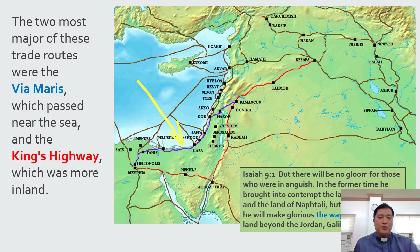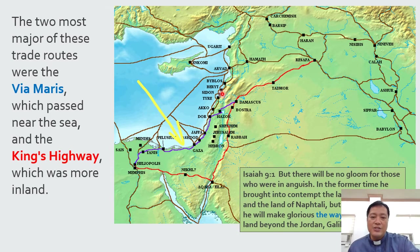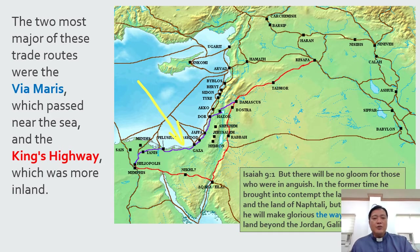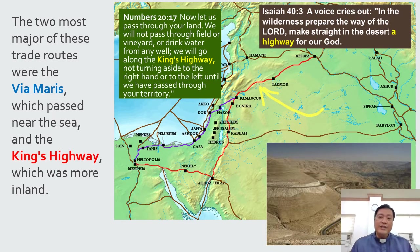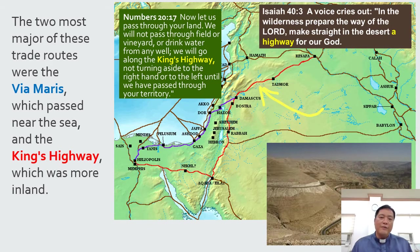The two most major trade routes were the Via Maris, which passes near the sea — it comes from Damascus, goes along the shore, and leads to Egypt in Memphis — and the King's Highway, which was more inland. You would see the King's Highway in Scripture. In Numbers chapter 20 verse 17 we read: 'Now let us pass through your land. We will not pass through field or vineyard or drink water from any well. We will go along the King's Highway and not turning aside to the right hand or to the left until we have passed through your territory.'